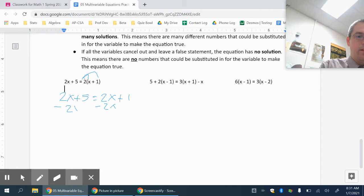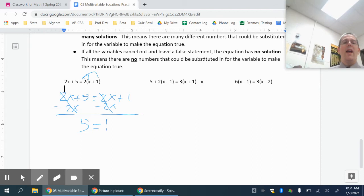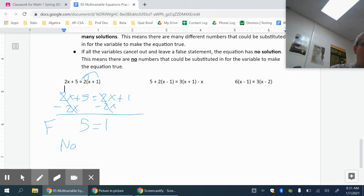Subtract 2x from both sides, and I'm going to be left with 5 equals 1. My variables did disappear on me, and this is a false statement. This is not true. So that means my answer is that there is no solution.